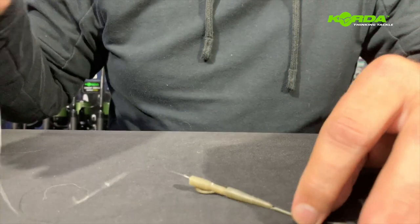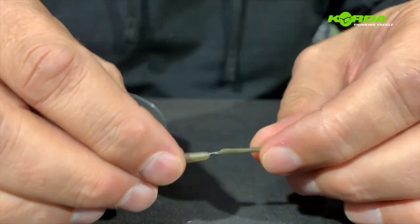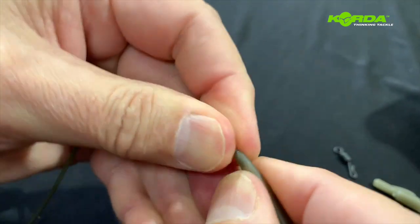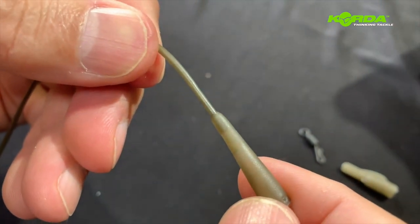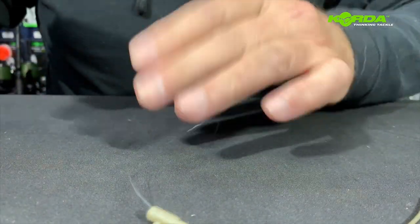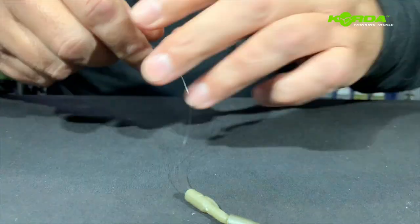Now I've got the whole system like that. What you can do is just wet it with a bit of saliva and then push the tubing and the tail rubber into one another. Then you can add the lead or you can add the lead afterwards.